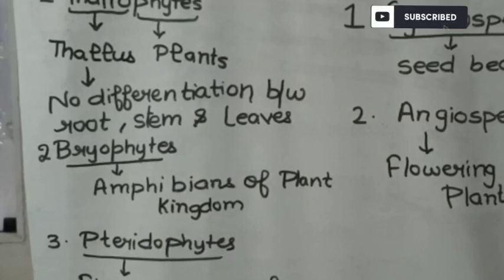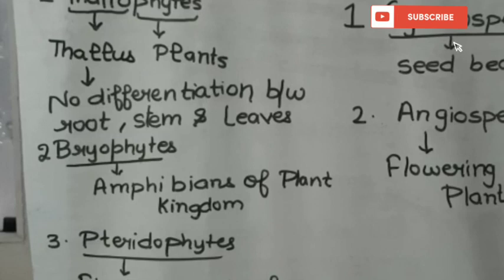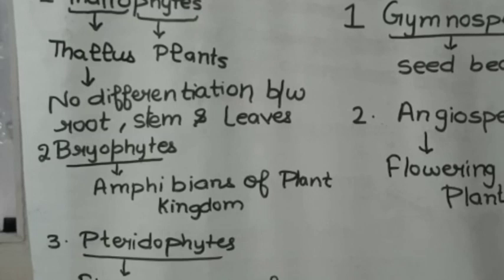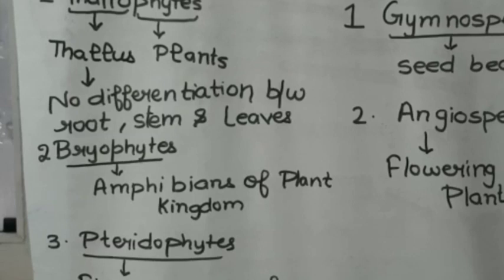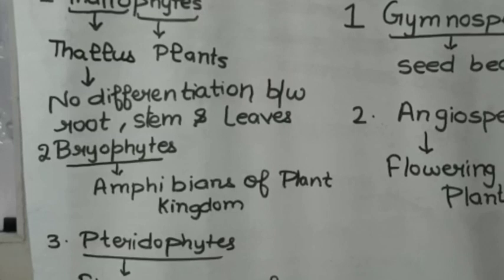Thallophytes comes from two words: Thallus plus Phytes. Phytes means plants, and Thallus means there is no differentiation between root, stem, and leaves. So in algae — the example of Thallophytes — you cannot differentiate which part is root, stem, or leaf. Types include green algae (Chlorophytes), red algae (Rhodophytes), and brown algae (Phaeophytes).